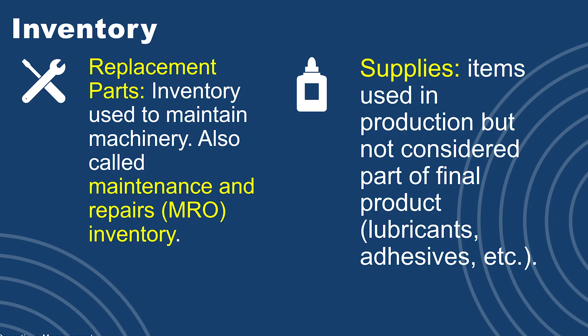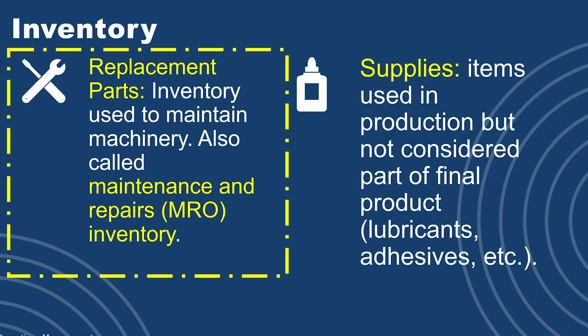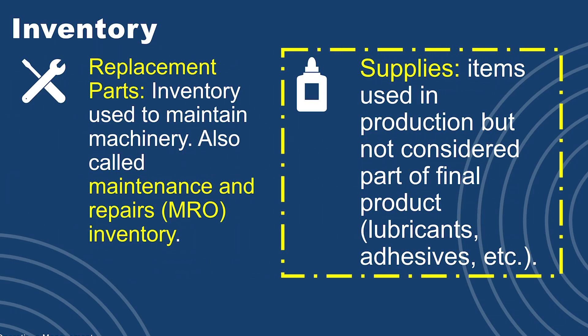There are a few more types to talk about. We have replacement parts inventory. When it comes to production, there's a lot of machinery and tools being used — machines break. So companies keep replacement parts inventory to replace machinery as it wears out. The other type is simply supplies: parts and materials used in the production process but not part of the finished component — things like nails or lubricants that are vital to production but are not considered part of the finished product.